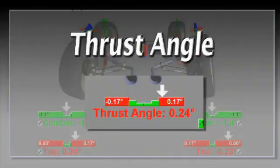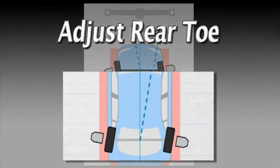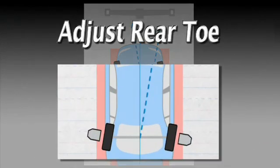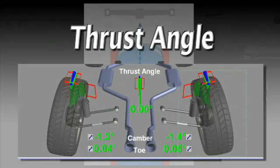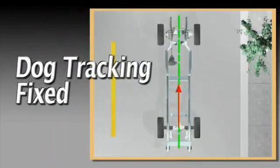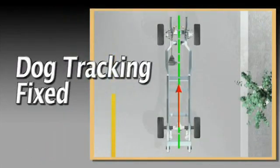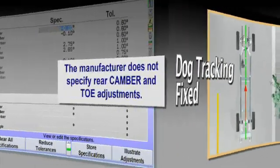Dog tracking may be minimized by correcting thrust angle. To do this, adjust toe to specifications on each side. Once toe is set, thrust angle will be very nearly zero, and the dog track is fixed.